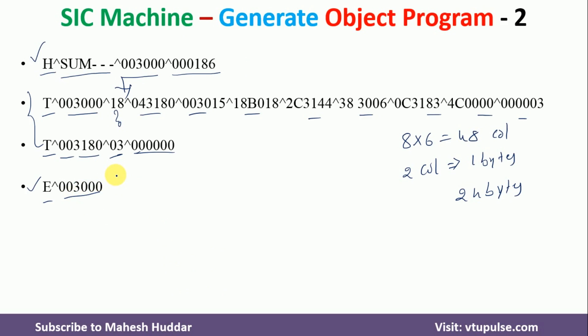This is a very simple way of converting an assembly language program into an object program in SIC machine. I hope the concept is clear. If you like the video, please like and share with your friends. Press the subscribe button for more videos and the bell icon for regular updates. Thank you for watching.